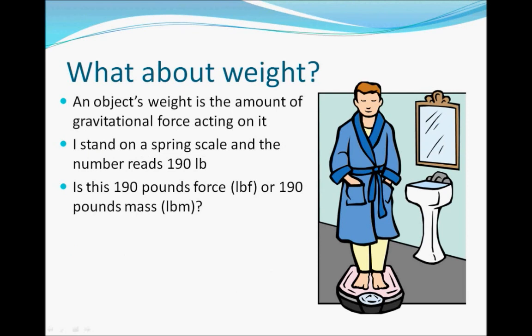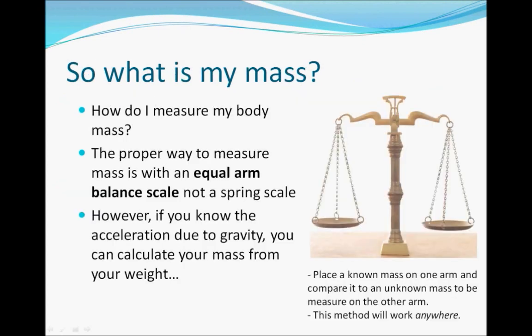Another very important measurement is weight, which we sometimes think of as being the same as mass. However, weight is actually defined using force — specifically, the weight of an object is the amount of gravitational force acting on it. So the units we use for weight should be the same as for force. For example, if I stand on a scale and it says I weigh 190 pounds, the answer is it should be pounds force. To measure mass directly, you shouldn't use a spring scale; instead you should use an equal arm balance scale. If I put an object of known mass — say 100 kilograms — on one side and sit on the other, and the scale is balanced, I know my mass is 100 kilograms. This measurement doesn't change depending on the force of gravity, so it works on Earth, the moon, or anywhere else.